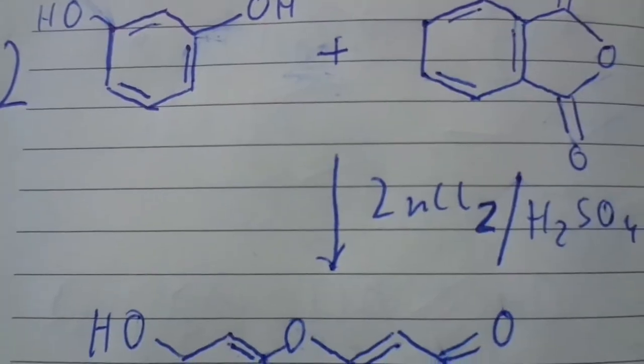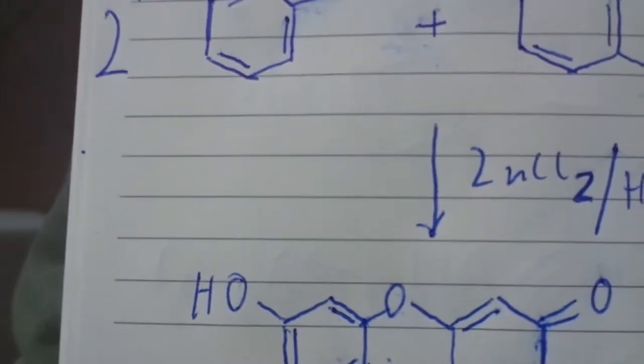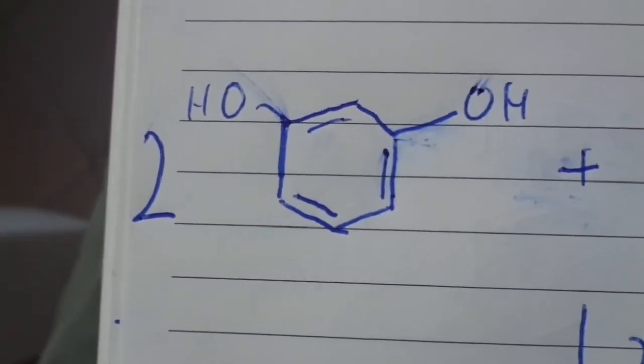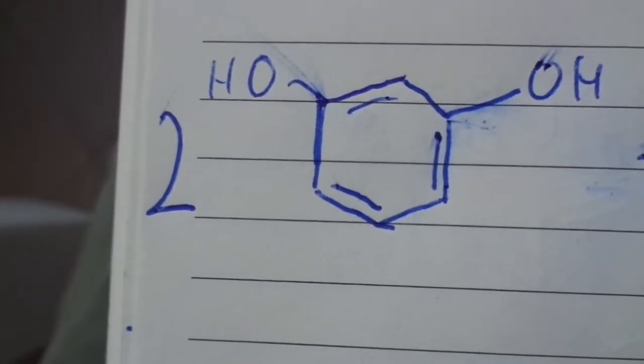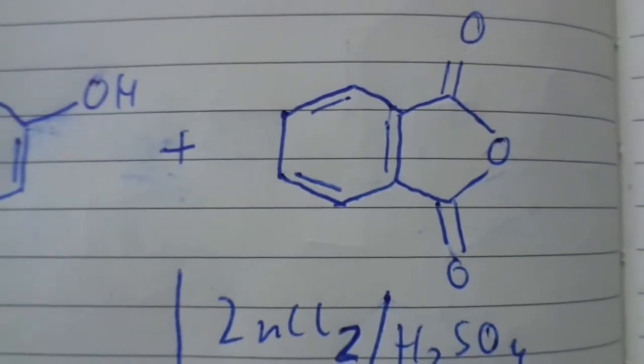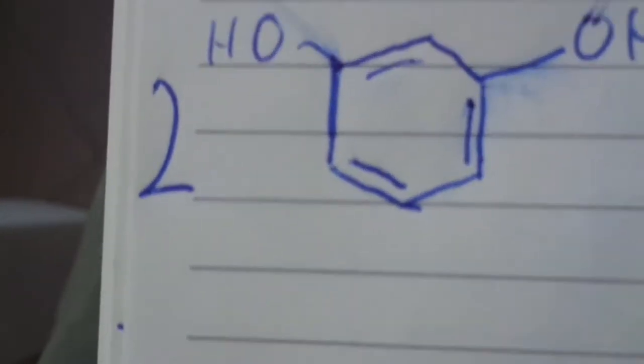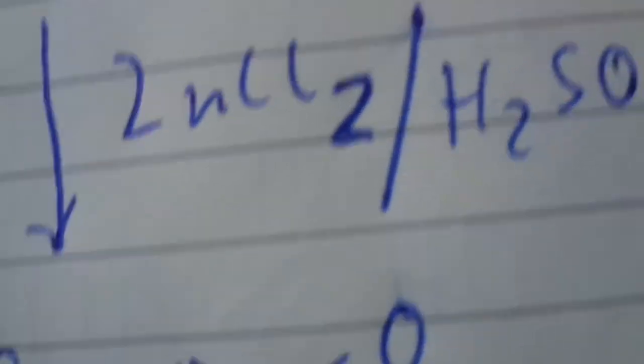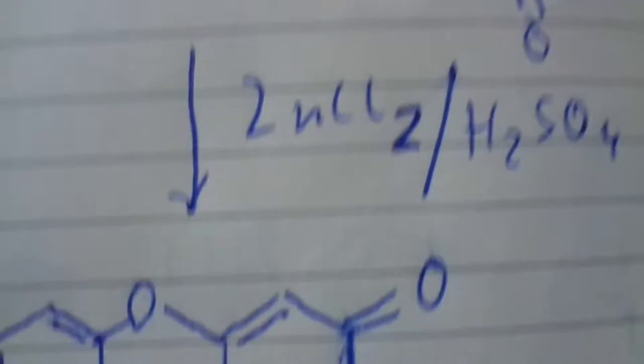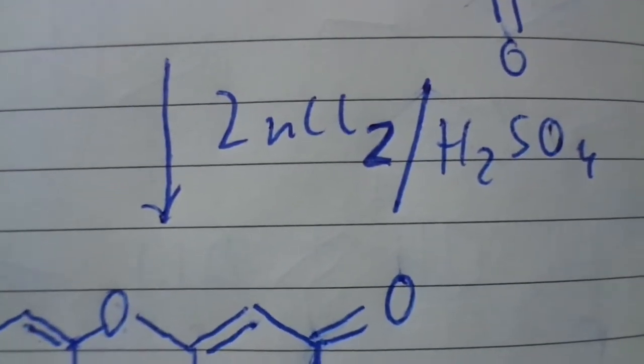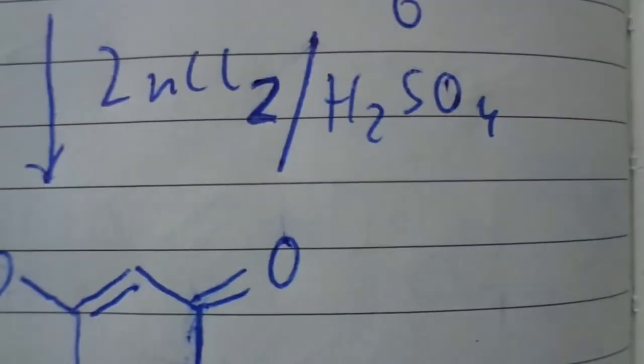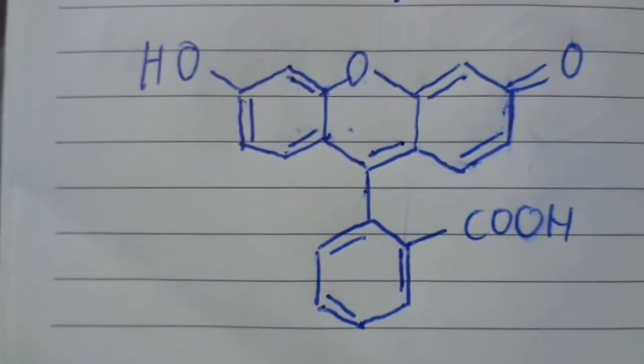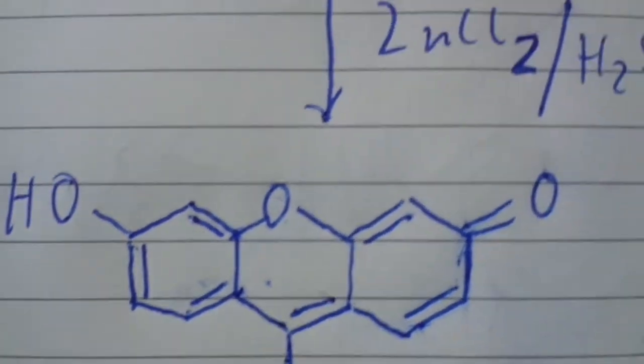So I'm just going to explain what's going on here. As you can see, there's a molecule of resorcinol and a molecule of phthalic anhydride. So we take two molecules of resorcinol and one molecule of phthalic anhydride and we use a catalyst, which can be zinc chloride or sulfuric acid, and we get our free base fluorescein.